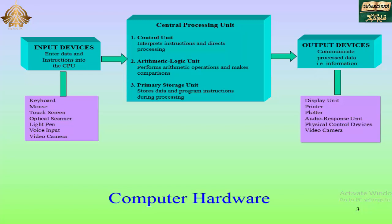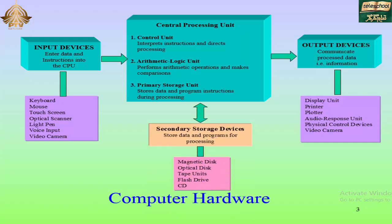The output devices communicate processed data and information to the display unit. Output devices include the printer, plotter, and audio response unit, physical control devices, and video camera. The secondary storage devices which store data and programs for processing are magnetic disk, optical disk, tape units, flash drive, and CDs. These are the computer hardware.